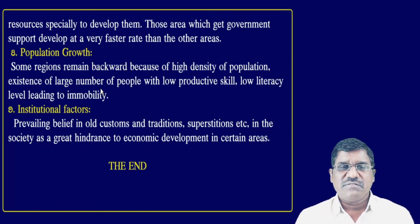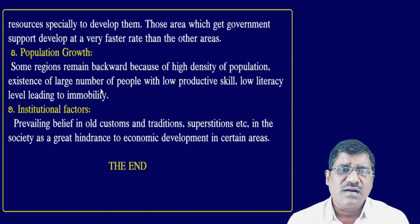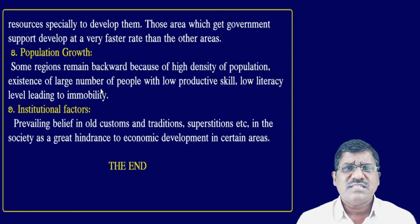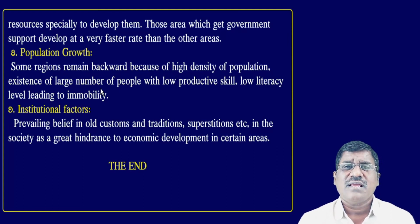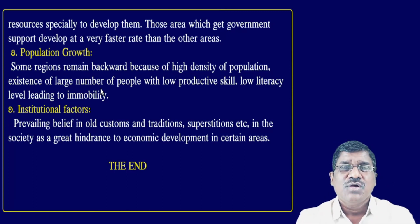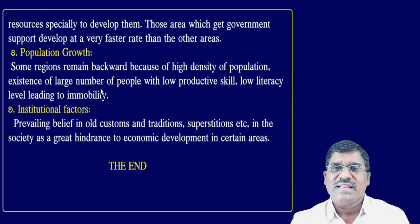The ninth cause is Institutional Factors. Prevailing beliefs in old customs, traditional superstitions, and outdated practices also contribute to underdevelopment. In many regions, people use traditional methods and older equipment and follow old beliefs. Due to total illiteracy, they do not adopt sophisticated technology or modern approaches. These areas always follow traditional methods and therefore their region does not develop. Institutional factors are thus also a cause of regional imbalances in India.